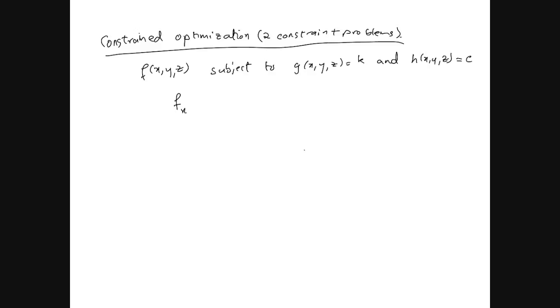So in this case, the problem is rather simple to set up. We'll have two Lagrange multipliers. We introduce a lambda with gx and a mu with hx. Plus mu times hz. And of course, then you have g equals k and h equals c. To that problem, we need to find x, y, z, lambda, and mu. That would be our objective.